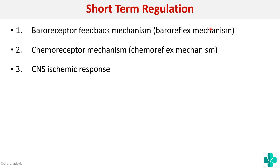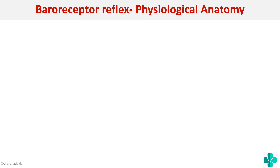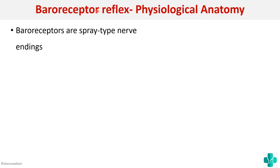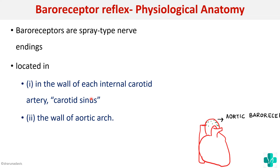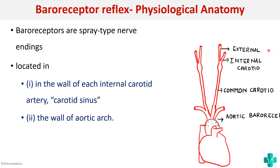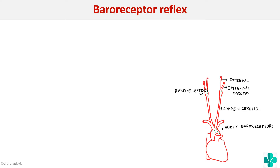The baroreceptor reflex comes from baroreceptors, which are spray-type nerve endings located in two areas: the wall of the internal carotid artery (the carotid sinus) and the wall of the aortic arch. The aortic arch contains the aortic baroreceptors, and the common carotid artery has the carotid sinus. So baroreceptors are present in both the aorta and the carotids, and they are spray-type nerve endings.